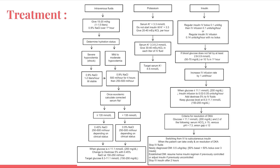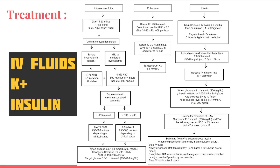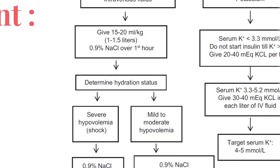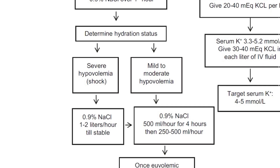Coming to treatment — there are three main things to manage: IV fluids, potassium, and insulin. For IV fluids, we generally start with 1 to 1.5 liters of normal saline over the first hour, then determine the hydration status — whether it is severe hypovolemia with shock or mild to moderate hypovolemia.